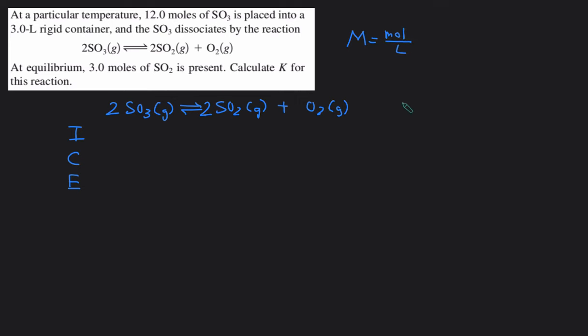So we can write the Kc expression here. Kc is going to equal concentration SO2 squared because it's 2 multiplied by the concentration O2 divided by the concentration of SO3 squared. So what we just have to figure out the equilibrium concentration of these and we can plug it in and we'll get the Kc value.